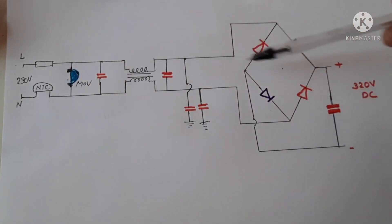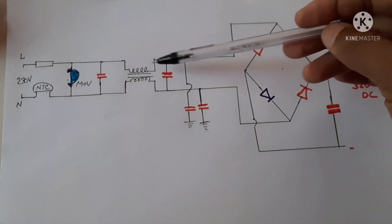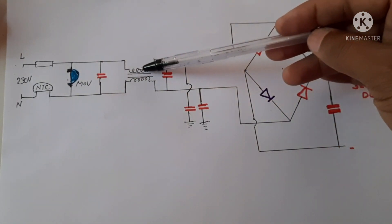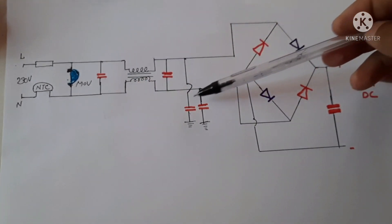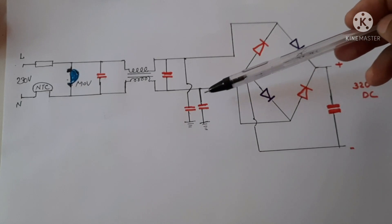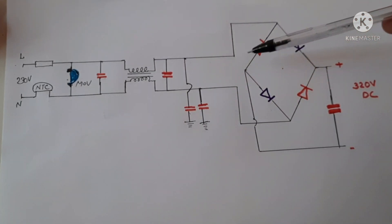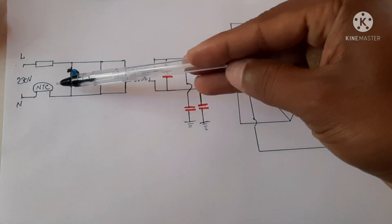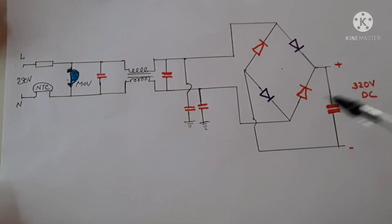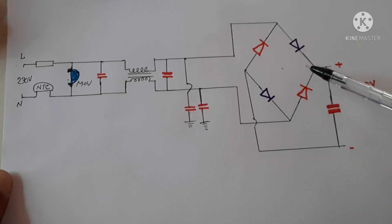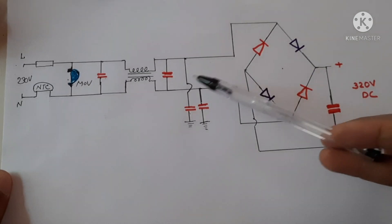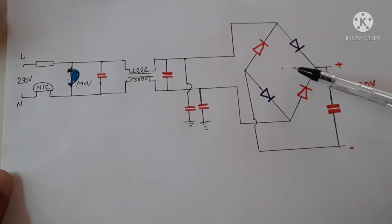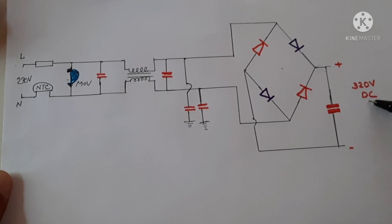In order to avoid switching effects coming back into the line, we are using this circuit — a common mode filter — which prevents high switching frequency from coming into the input side. This is a Class X capacitor and these are Class Y capacitors, used to protect from switching effects on the input side. After that there is the bridge rectifier, which is used to rectify the AC signal to a DC voltage.